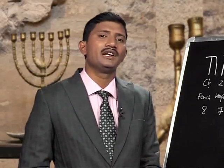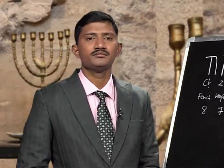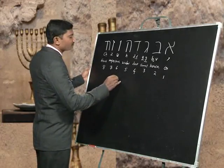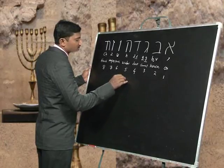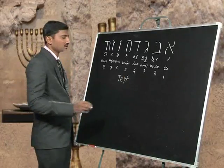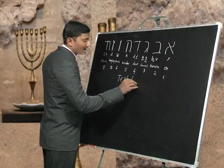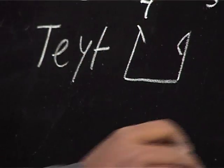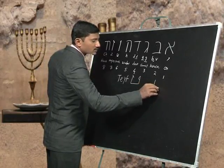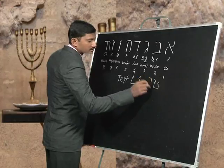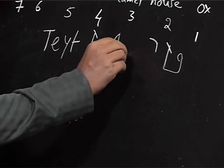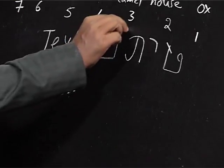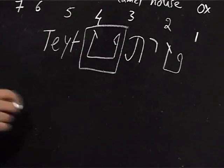Today let us learn the next letter — the ninth letter — which is called Tait (Tet). This is the ninth letter that we will study in the Hebrew language.